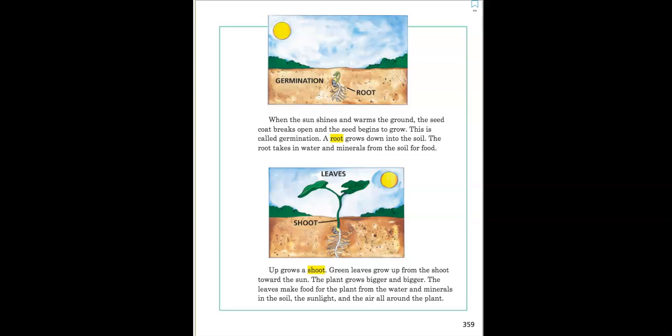The leaves make food for the plant from the water and minerals in the soil, the sunlight, and the air all around the plant.